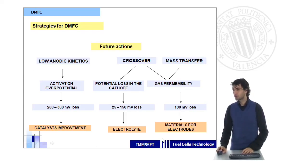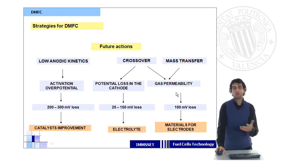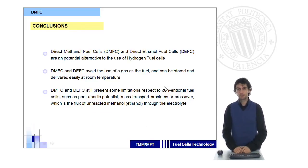So these are some of the improvements that must be carried out, especially those related to catalysts, those related to electrolytes, concerning crossover, and also those related to the materials used for the electrodes, if we want to avoid this mass transfer effect.